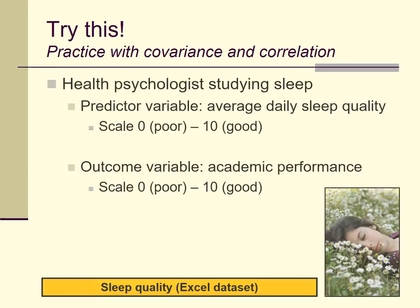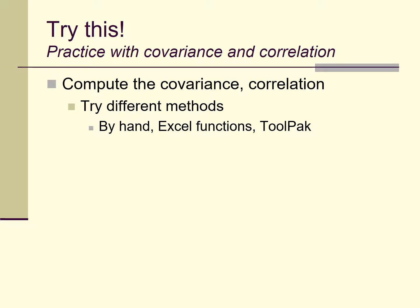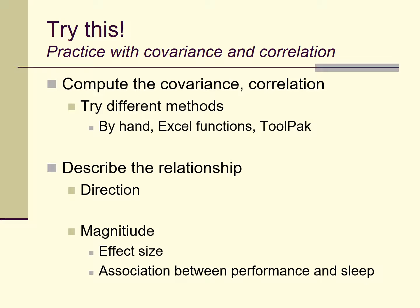Here's a practice exercise. Imagine you're a health psychologist studying sleep. You have a predictor variable of average daily sleep quality (0 = really poor sleep, 10 = really good sleep) and an outcome variable of academic performance. I've linked to a fake dataset on Blackboard. Compute the covariation and correlation using different methods — do all the steps manually, use an Excel function, and try the ToolPak — then describe the direction and magnitude of the relationship.